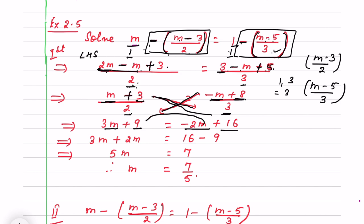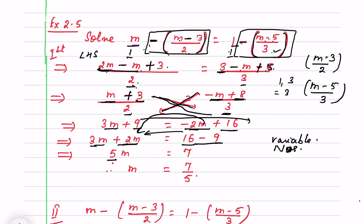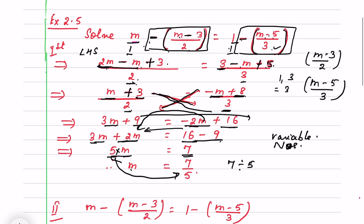Now I bring variables to the left-hand side and numbers to the right-hand side. 3m plus 2m equals 16 minus 9. Variables 3m and 2m are like terms; minus 2m brought to the left becomes plus 2m. 16 remains on the RHS and 9 brought to the RHS becomes minus 9. So 3m plus 2m is 5m, and 16 minus 9 is 7. Therefore 5m equals 7, and m equals 7 by 5.